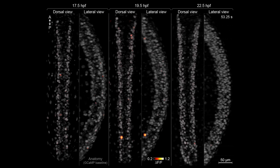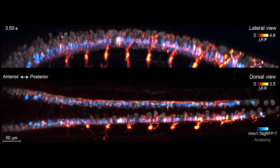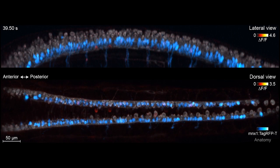Over the next few hours, the spinal circuit undergoes functional maturation and eventually produces the coordinated left-right alternating activity patterns that give rise to the tail coiling behavior.